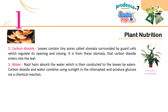Carbon dioxide: Leaves contain tiny pores called stomata, surrounded by guard cells which regulate their opening and closing. It is through these stomata that carbon dioxide enters into the leaf.